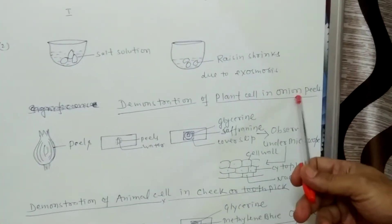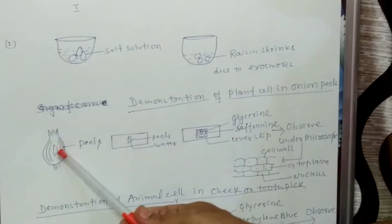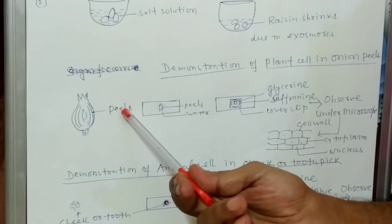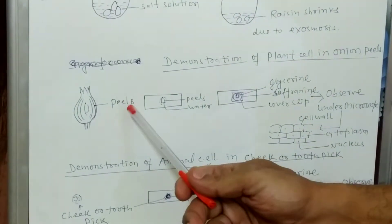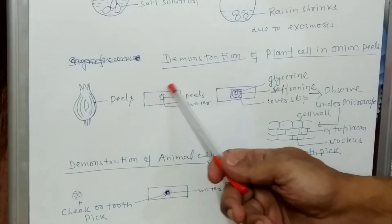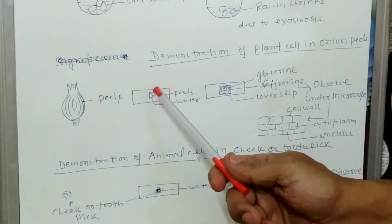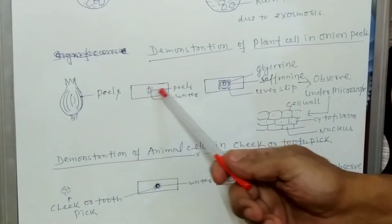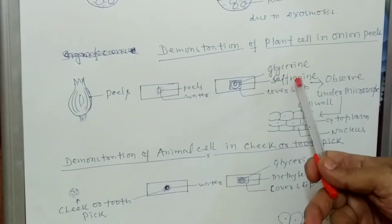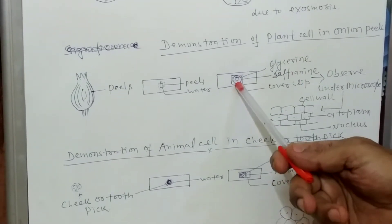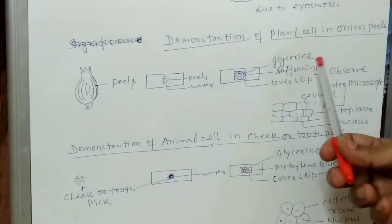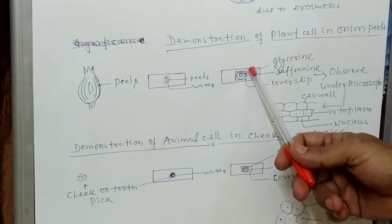To demonstrate the plant cell in onion peels, we take the onion and from the inner side we find out the membranous peels. After cutting with a blade, we give the peel a proper shape and size and put it over the slides. After placing on the slide, we put one or two drops of water. Then we put safranin, which is a staining material that is red or pink in color. This safranin gives color to the cells so that we can find the cytoplasm and nucleus clearly.